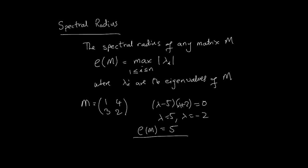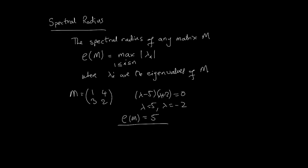One important thing to keep in mind is there is a property of the spectral radius related to the norm of any matrix. For any natural matrix norm on M, rho(M) is less than or equal to the norm of M — just something to keep in mind.